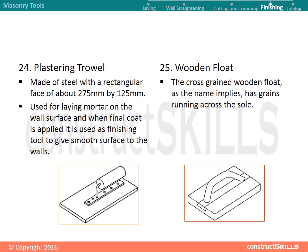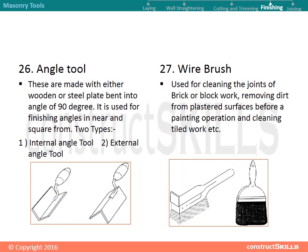Wooden float. The cross-grained wooden float, as the name implies, has grains running across the sole. Angle tools are made with either wooden or steel plate bent into an angle of 90 degrees, used for finishing angles neatly and squarely. There are two types: one internal angle tool and two external angle tool.